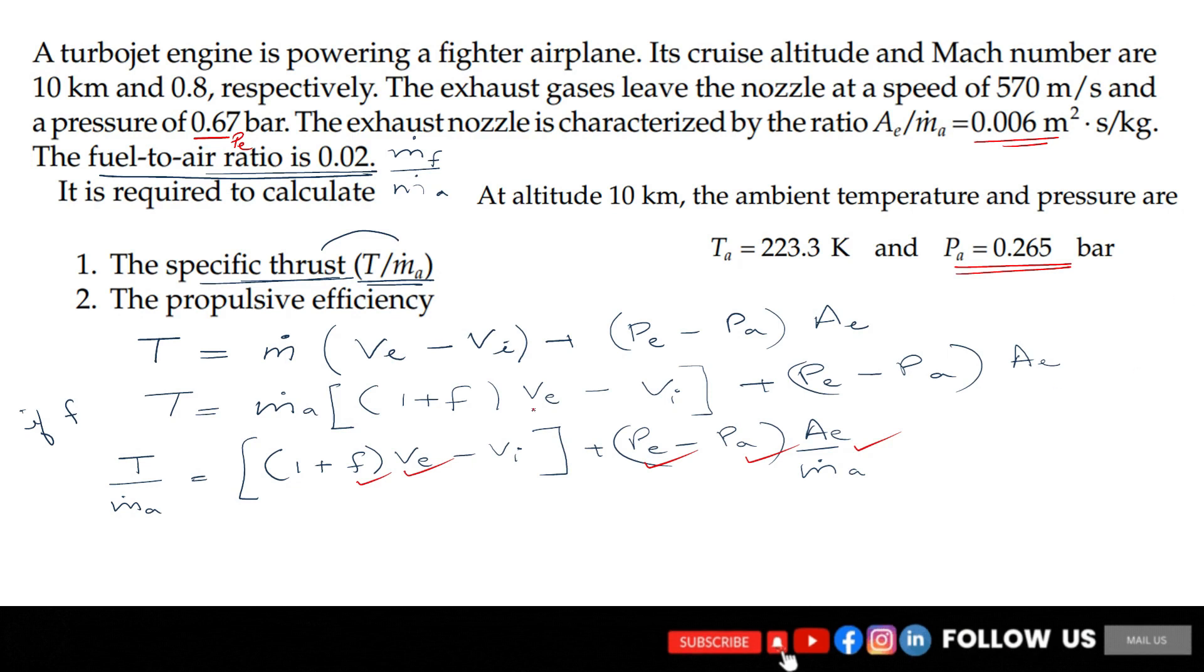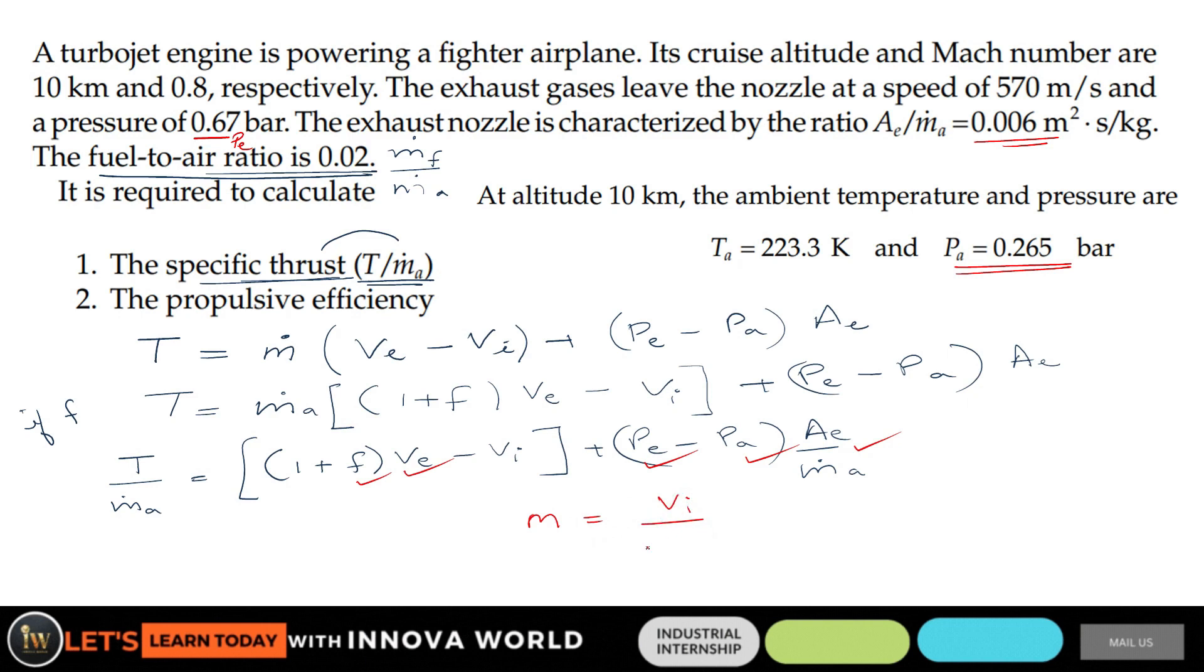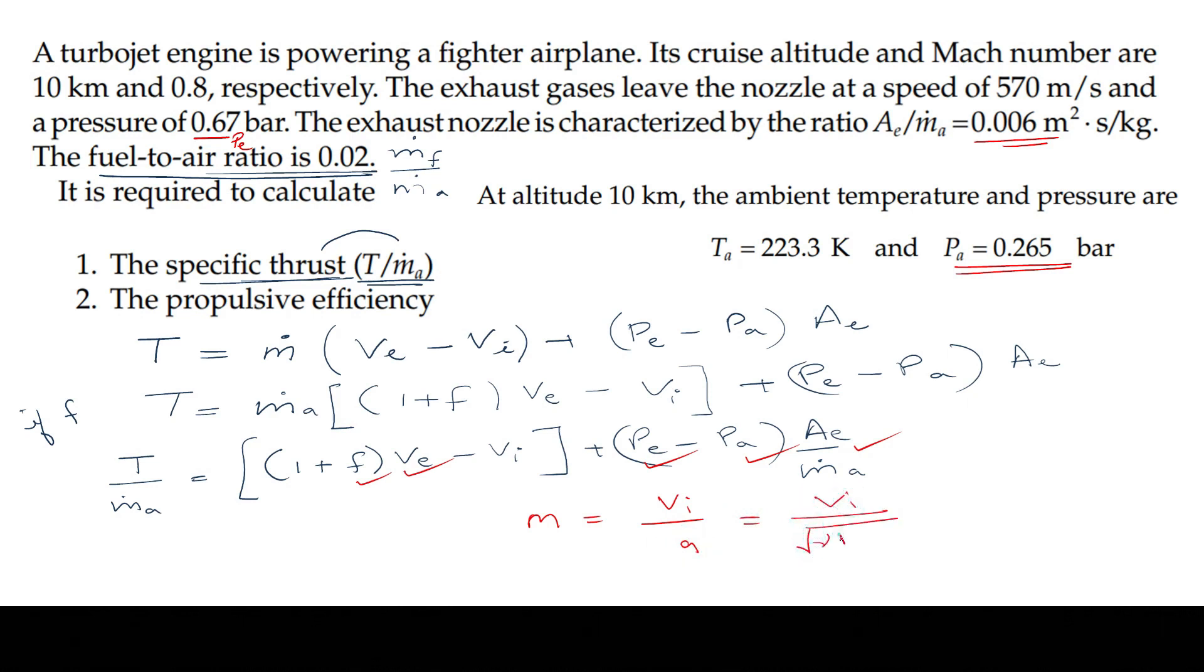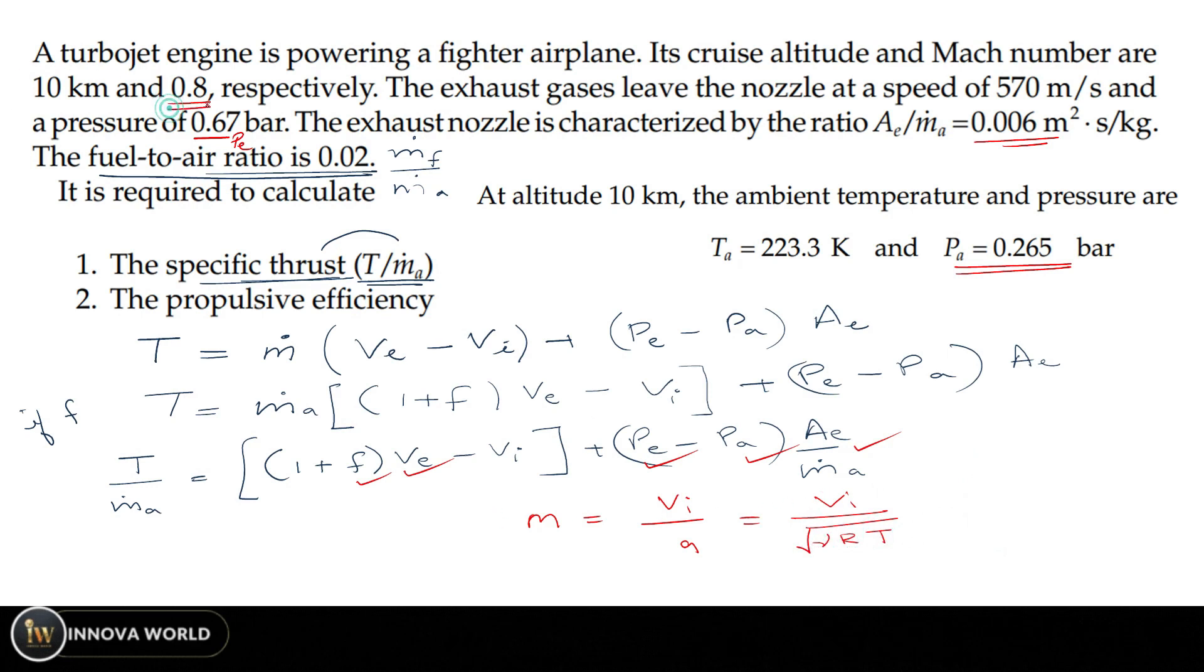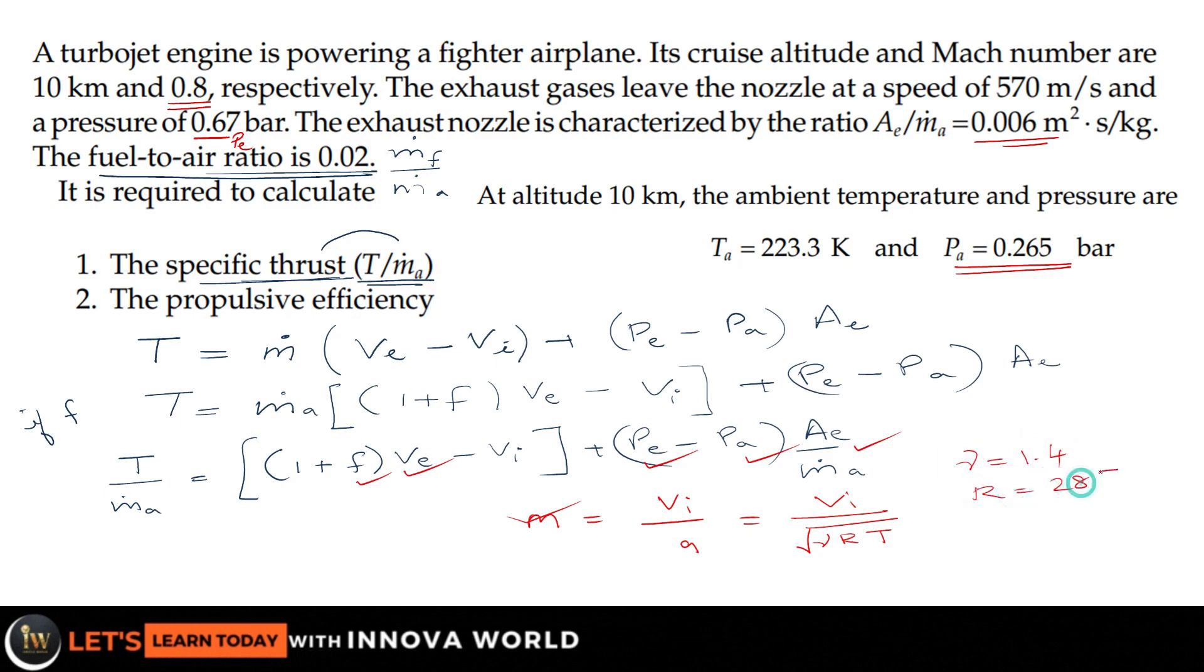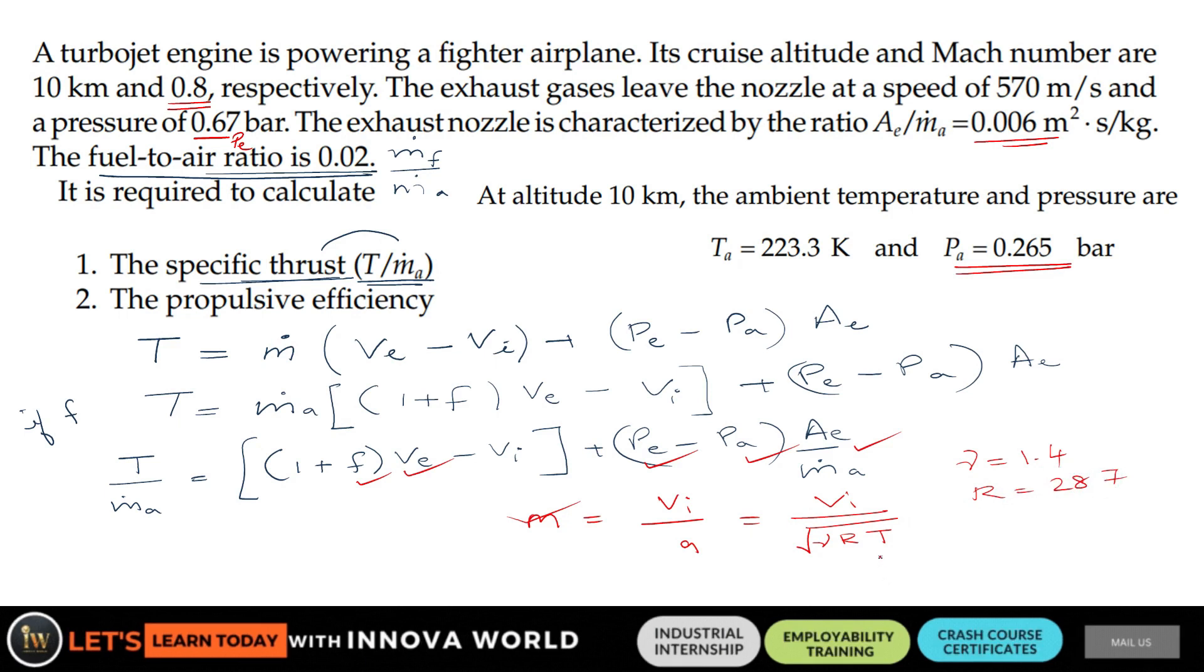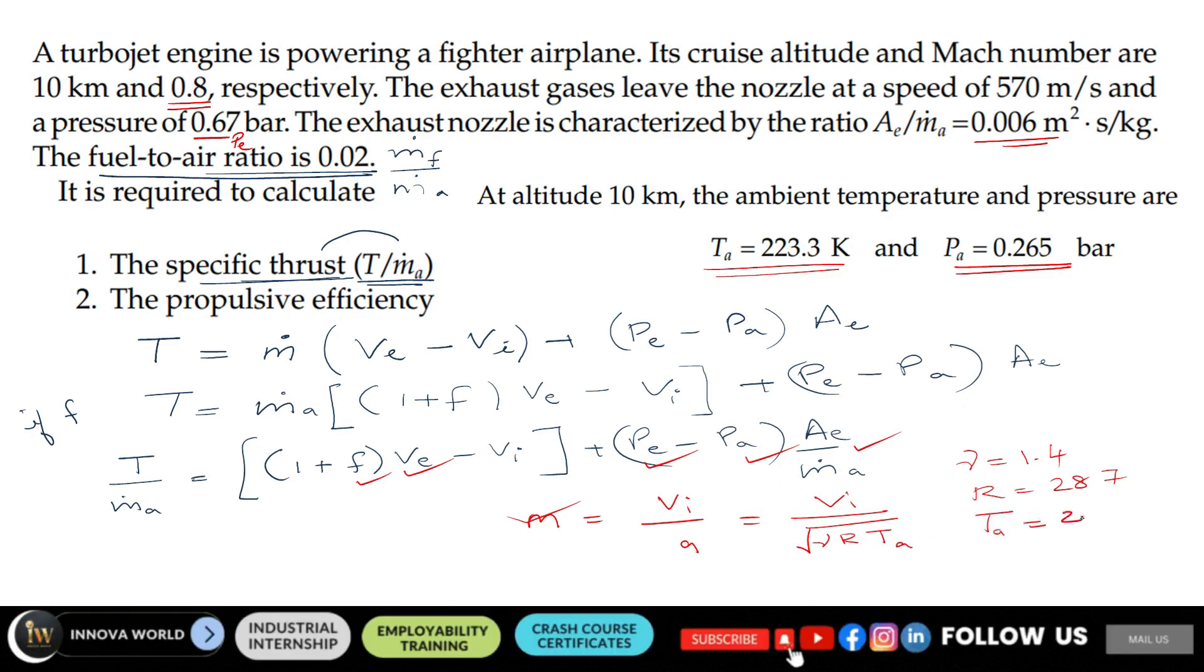It will be by Mach number M = Vi/a. How can I find a? a = √(γRT). The Mach number is given. Gamma we will consider as the adiabatic index 1.4, R is 287, and which T should we include? We are finding the inlet, so we'll use ambient temperature Ta = 223.3 K.